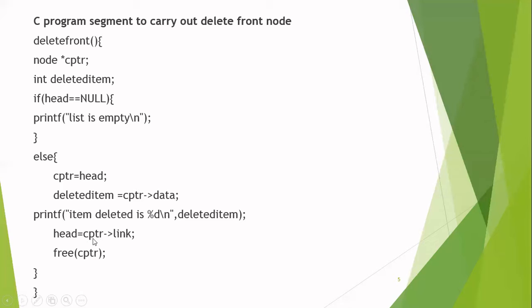This is how we are going to delete the node by changing the head pointer to the address of the next node. After changing the head pointer, you are going to free the memory location allocated for the first node. Just pass the address of the first node as a parameter to the free function. Free is a memory deallocation function provided by C language. When you pass the address of the first node present in CPTR, the memory allocated for that node will be deleted. This is the simple C code which illustrates how to delete a node present at the beginning of the linked list.